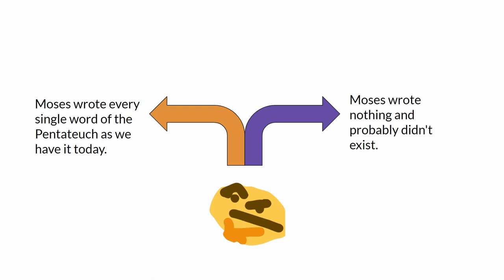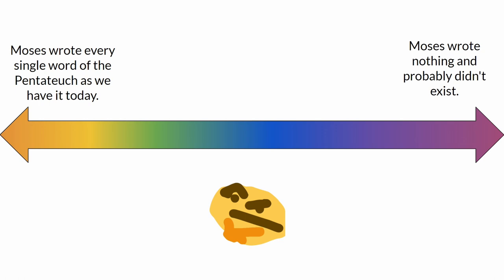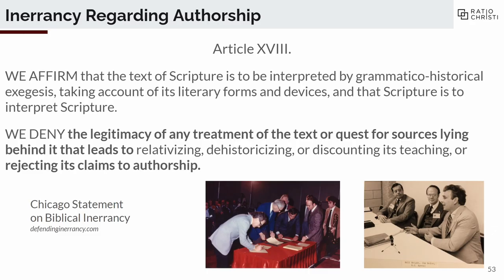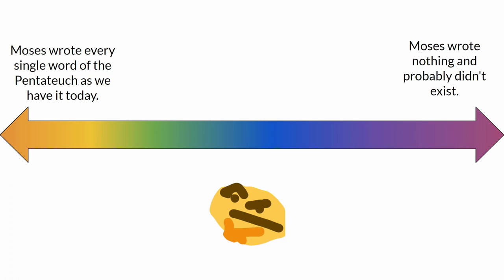This leads to a dilemma. Our first view is that Moses wrote every single word of the Pentateuch as we have it today — including his own death, his own humility, prophecies of the future, and law codes for places he had never been. Our alternative is that Moses wrote none of those things, most likely didn't exist, and all of this was created by four anonymous sources across a vast period of time. This is clearly a false dichotomy — there's a massive spectrum of views in between. I want to return to our idea about inerrancy: if you care about inerrancy, where do we draw the line on the inerrancy spectrum?